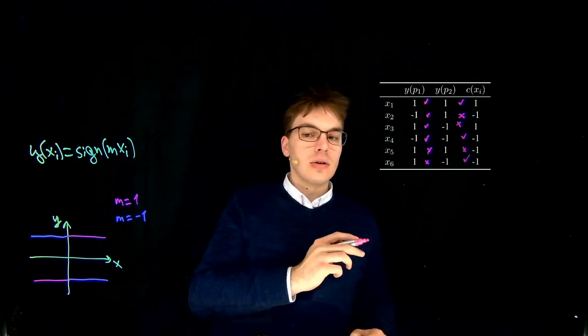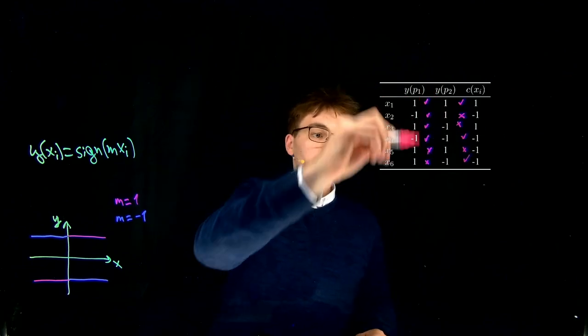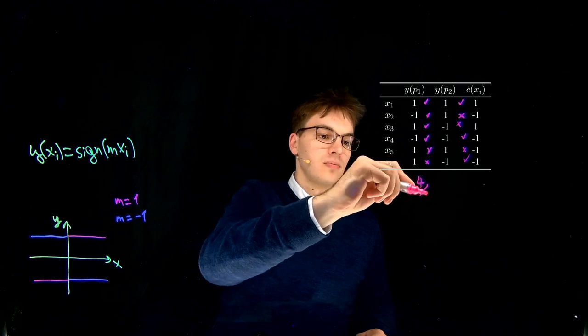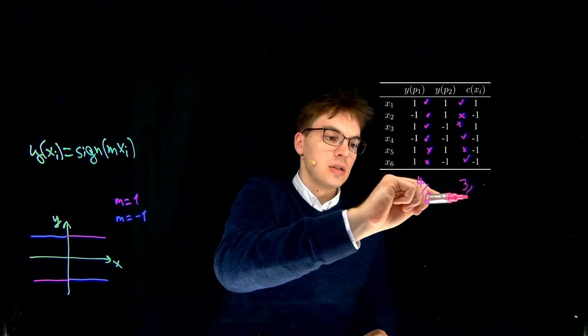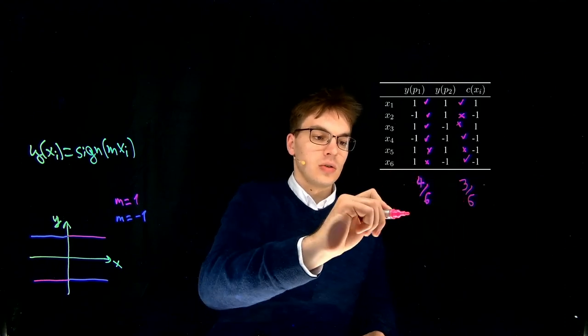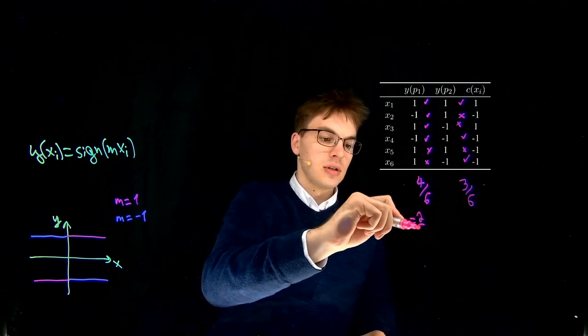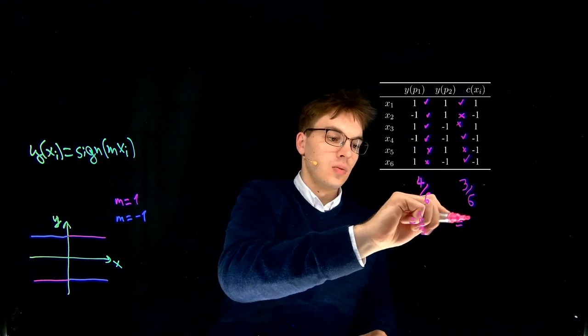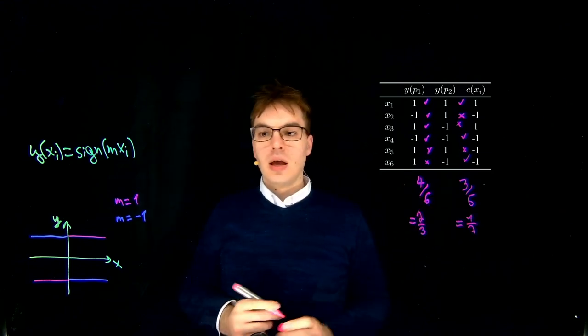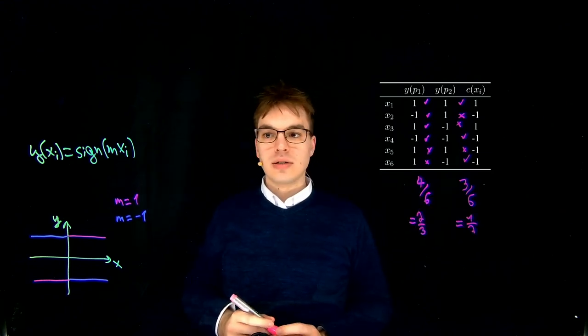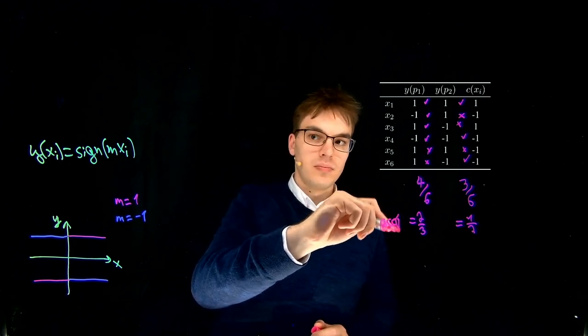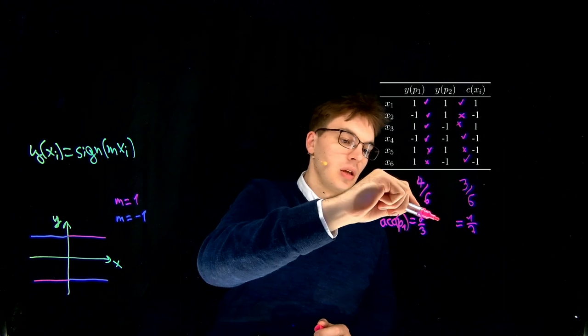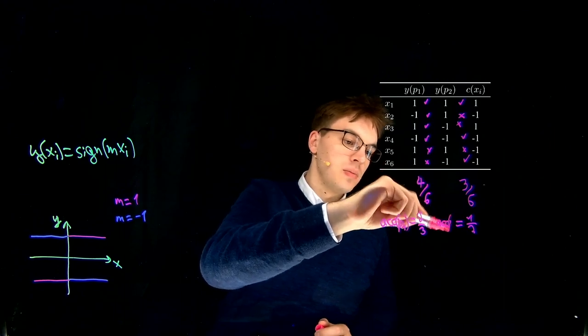And now we just count. So out of 6, we have 4 correct ones here. And out of 6, we have 3 correct ones here. So you could write 2 thirds and 1 half. And this is our result for the accuracy for p1 and the accuracy for p2.